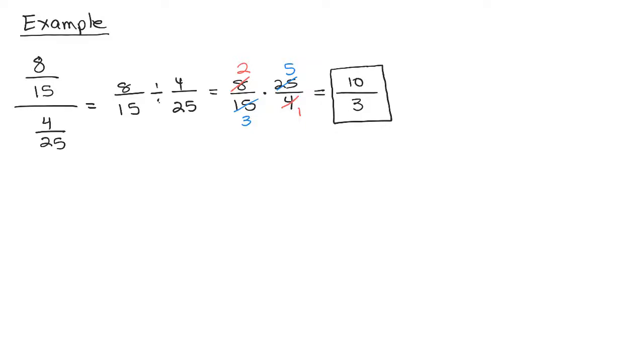Now the second method. I'm going to rewrite this problem, 8/15 over 4/25, using a method where you multiply the whole numerator and whole denominator by the least common denominator of all of the denominators. In the numerator there's only a denominator of 15, and in the denominator there's a denominator of 25. So you have to figure out what the least common multiple of 15 and 25 is.